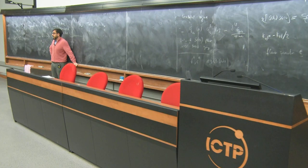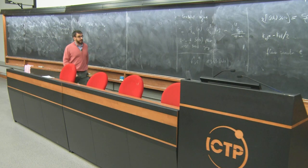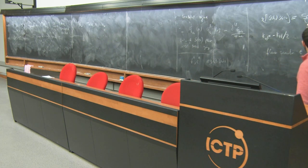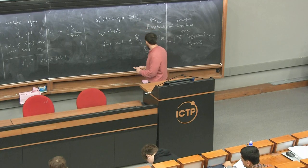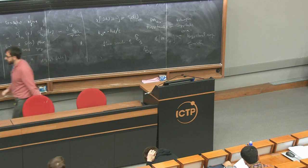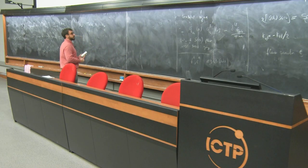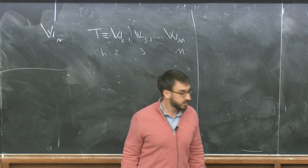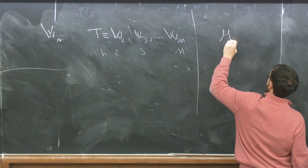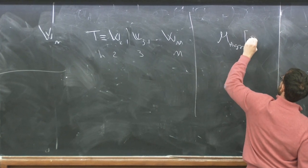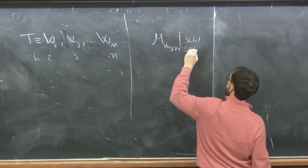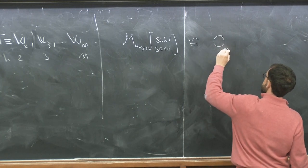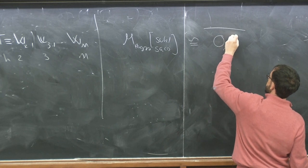So generators of the Higgs branch chiral ring become generators of the VOA. Let me just give you the answer for what the Higgs branch of this theory is: the Higgs branch of SU(2) super QCD is the closure of the minimal nilpotent orbit for SO(8).